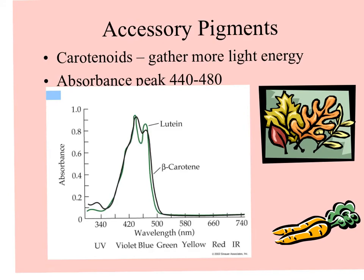But those aren't the only pigments that capture light. The carotenoids are accessory pigments, so-called because of their orange, yellow, and red colors. They have an absorbance peak between 440 and 480 nanometers, and an important carotenoid, lutein, has been shown to be very important in eye health.